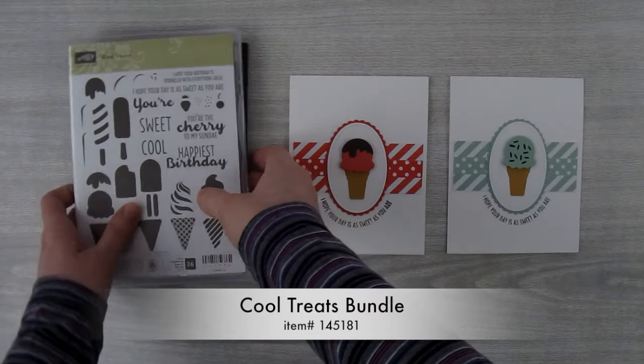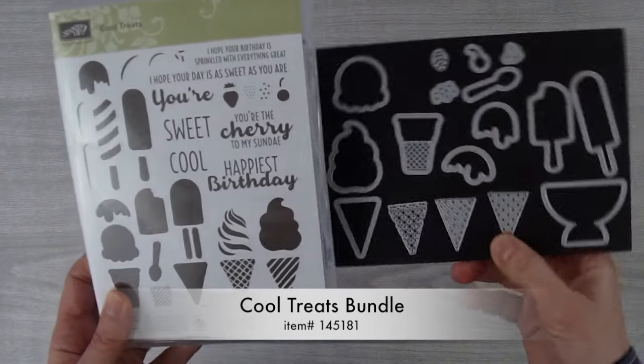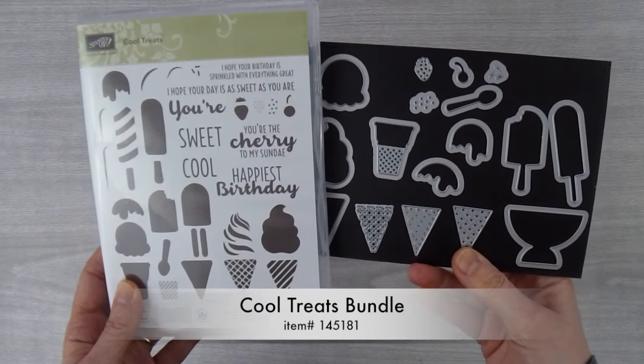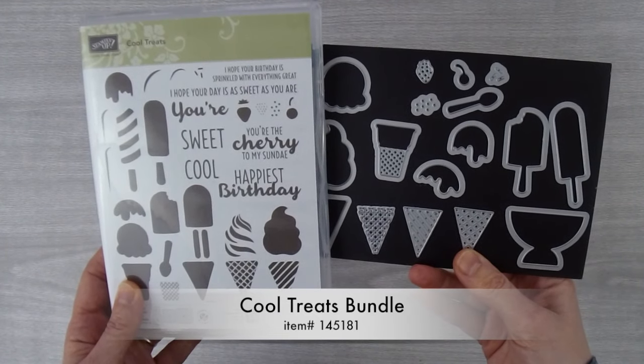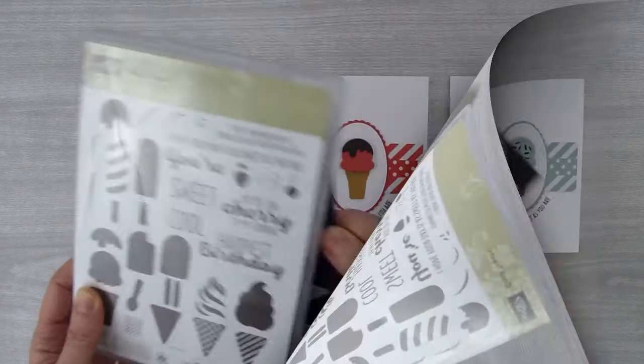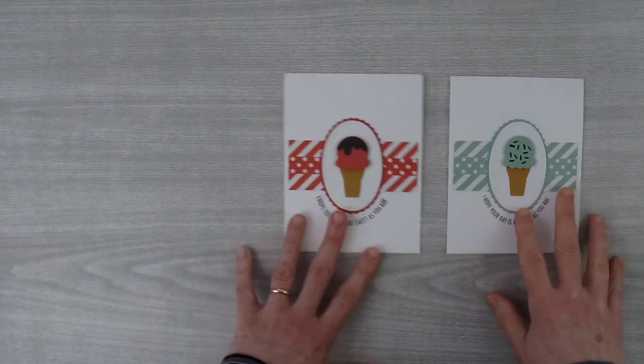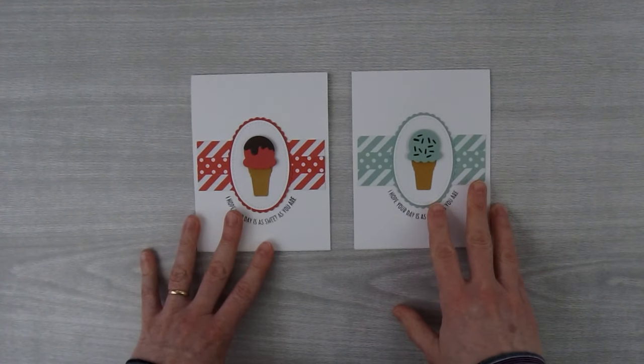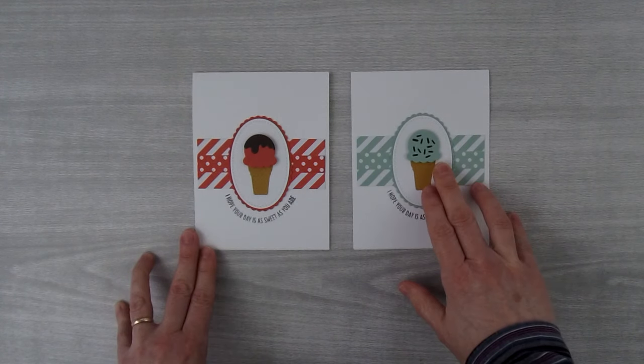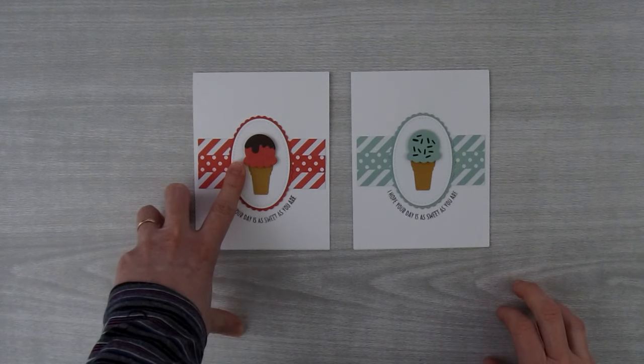Now this bundle consists of the Cool Treats stamp set and the Frozen Treats framelits. And if you purchase both of these together as a bundle you can save 10%. I'm also using two in colors that are going to be retiring really soon. They are Mint Macaron and Watermelon Wonder.